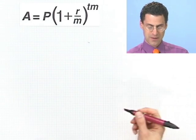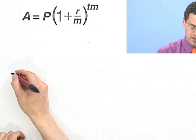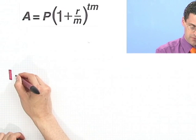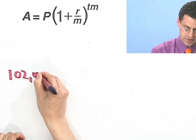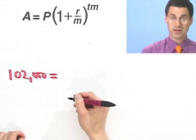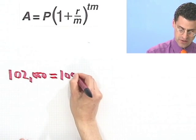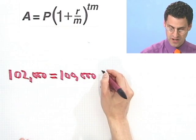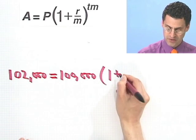So if we were to plug all the information in, let's see what happens. In this case, what we want is, at the end of the day, we want to have $102,000. And we know that should equal what we're going to put in now, which is $100,000, times 1 plus the rate.